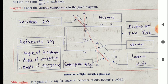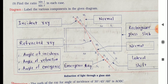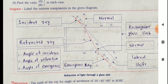Observe the images of the base of pins P1 and P2 through the glass slab from the opposite side. Fix two pins P3 and P4 such that the bases of those pins are exactly in line with the images of the bases of pins P1 and P2.